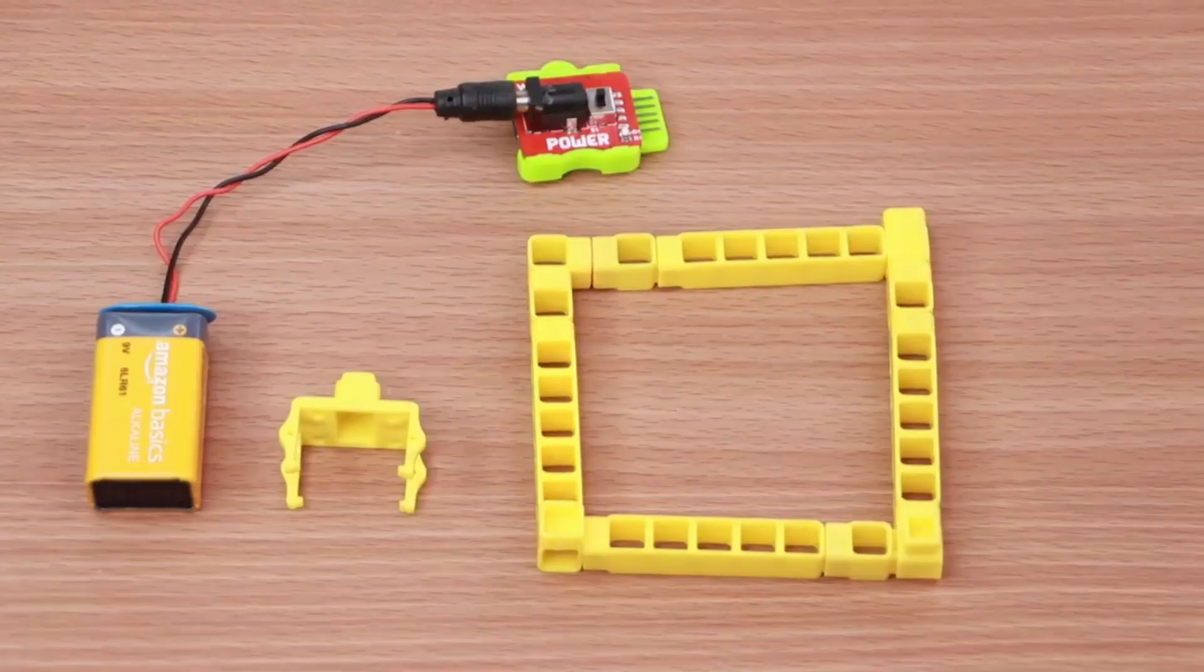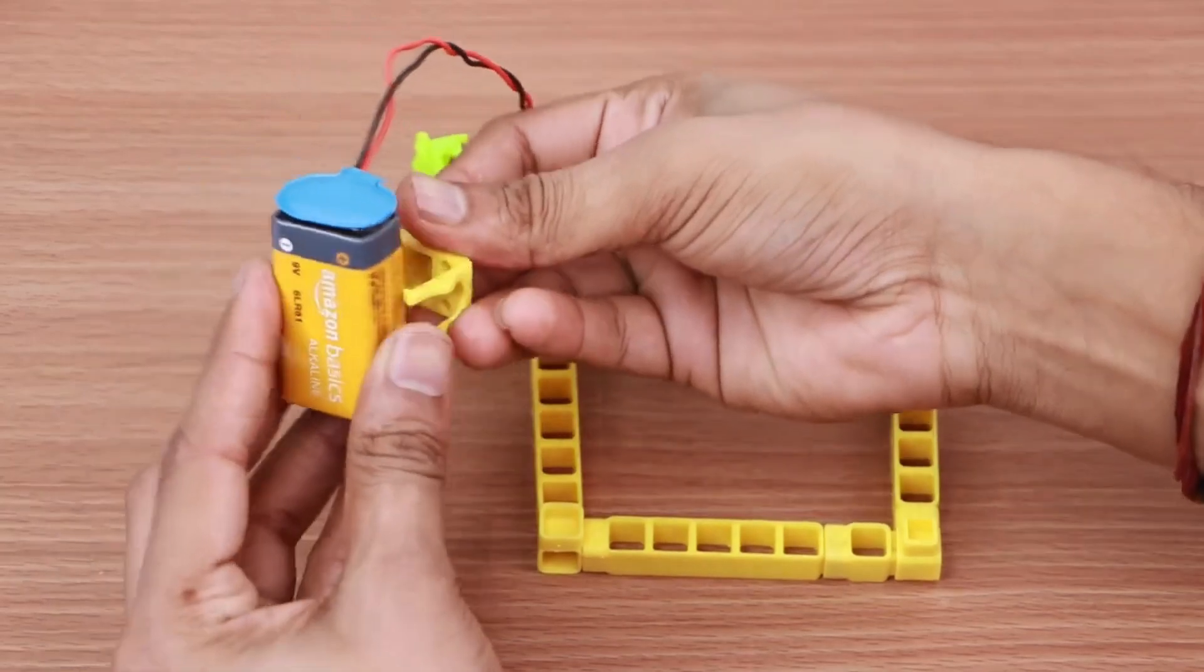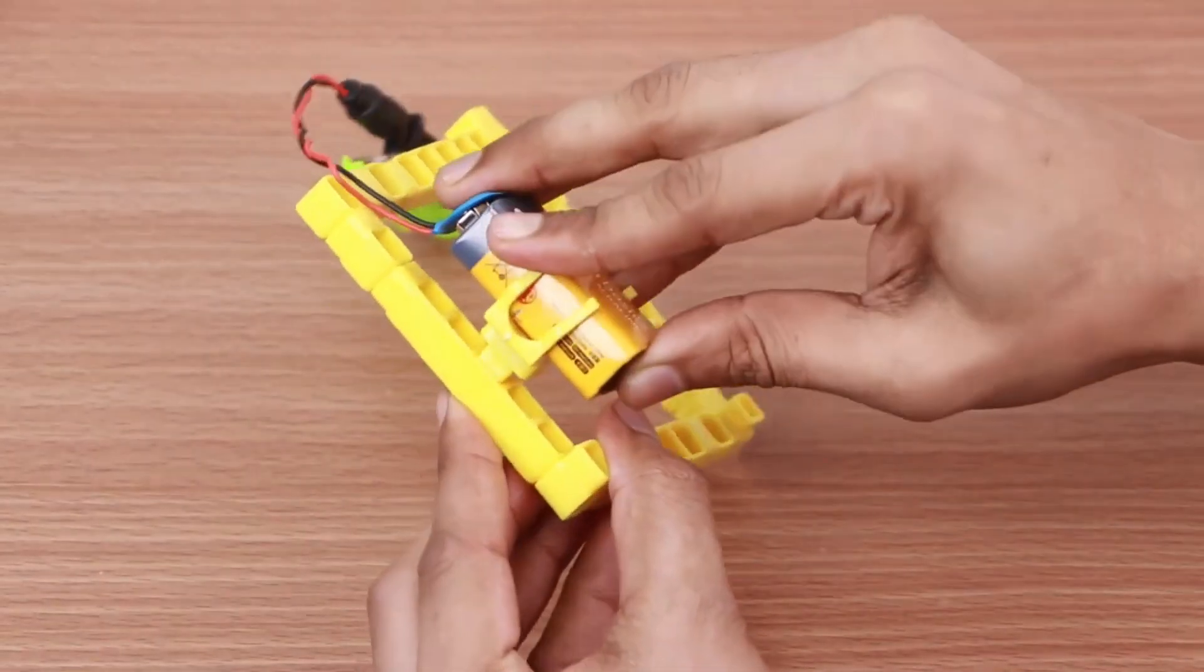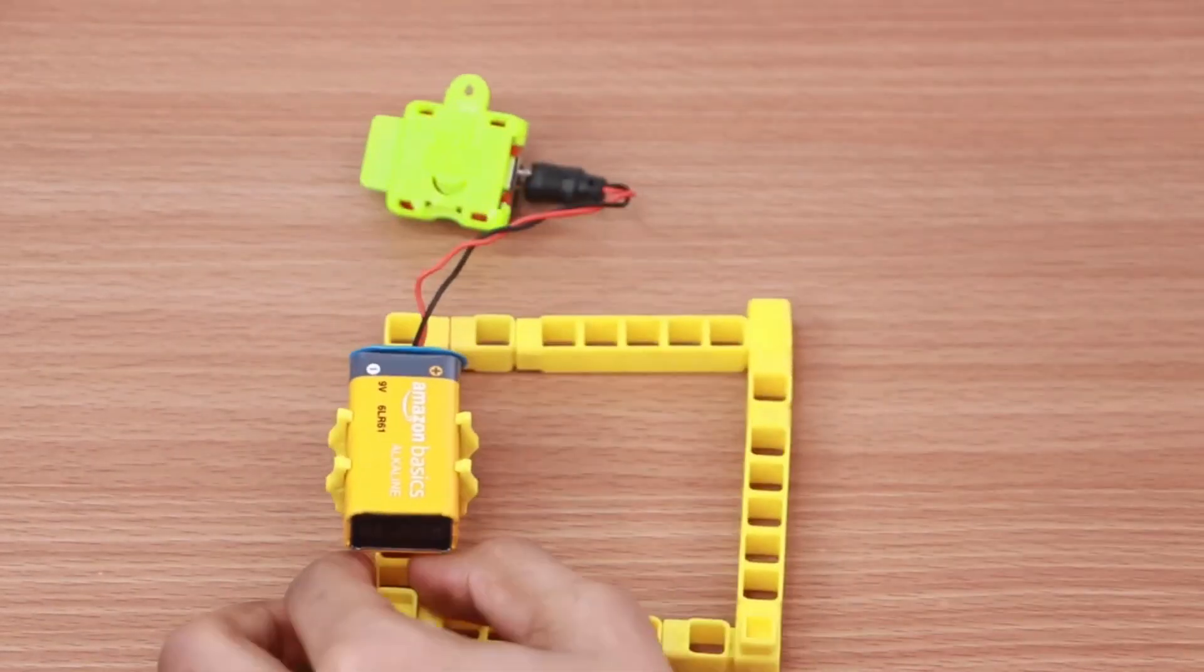To fortify the base of the drummer, take the power blocks attached to a battery and a battery holder. Connect the battery to the battery holder and attach it to the base.